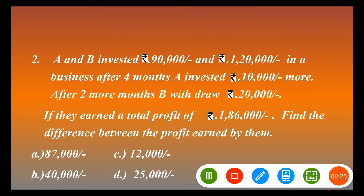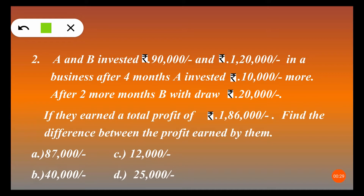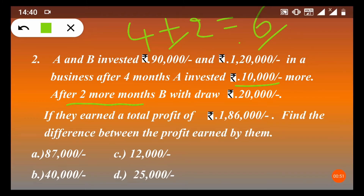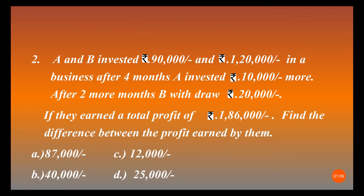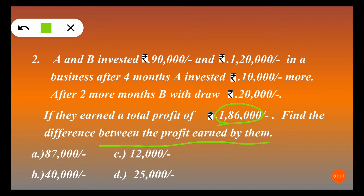This question is similar to the first one but with a few variations. A invested 90,000 and B invested 1 lakh 20,000. After 4 months A's investment becomes 1 lakh rupees. After 2 more months — that is, after a total of 6 months — B withdraws 20,000 rupees from his investment of 1 lakh 20,000, leaving him with 1 lakh rupees. The total profit is 1 lakh 86,000 rupees and we need to find the difference between their profits.